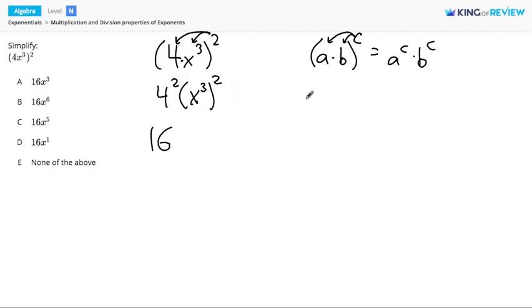Here's how that works. If you have x to the power a, and then that is raised to the power b, this is equivalent to writing x to the a times b.